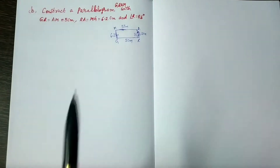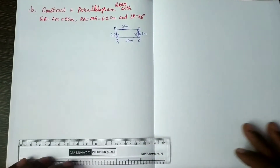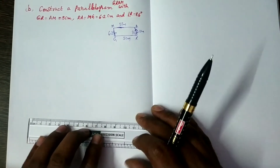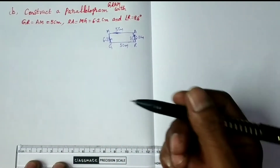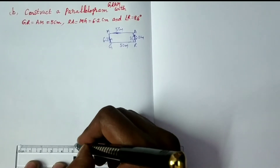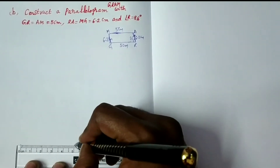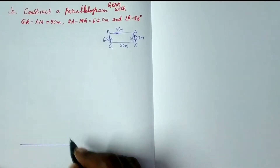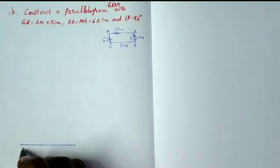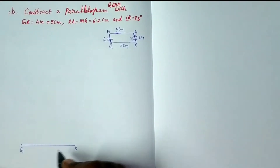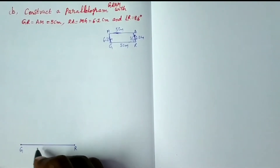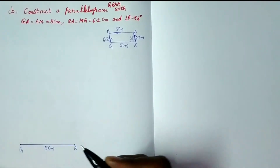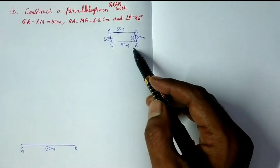First of all, GR equals 5 cm. So, by using a scale, take 5 cm — this is 0 and this is 5. Join a line segment. This is GR, that is 5 cm.